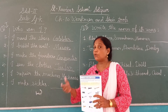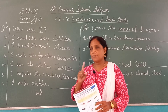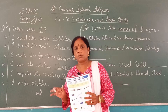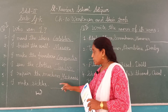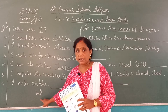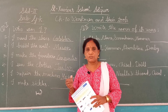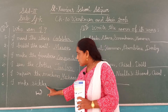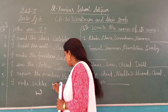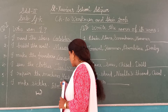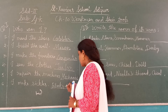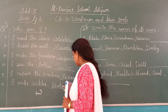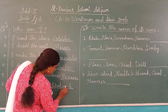So this iron item — sickles — who makes it? Blacksmith makes it. The blacksmith makes all iron items (lohe ki sari vastu). So now you understand what sickles means — it is used for cutting crops in the field. And the answer is Blacksmith, B-L-A-C-K-S-M-I-T-H. Blacksmith.